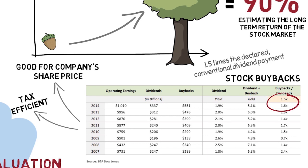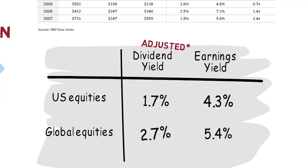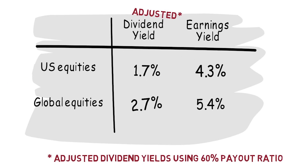That pace of buybacks may be unsustainable, but even if we assume that companies today would pay out a bit over 60% of their stated earnings as dividends — which is the long-term historical average — then the US dividend yield would be 1% higher at 2.6%, and we'd have 3.2% for global equities.